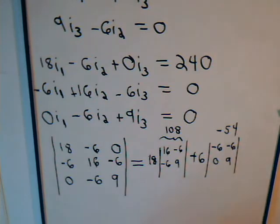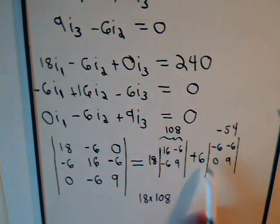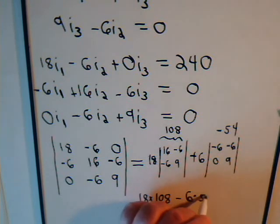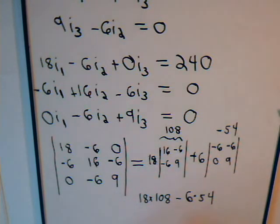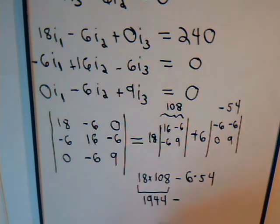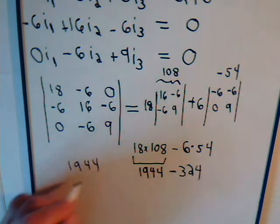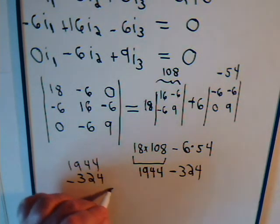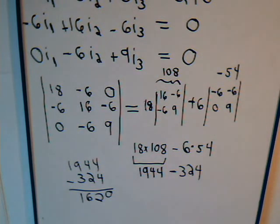The numerical value of the determinant is 18 times 108, minus 6 times 54. That gives us 1944 minus 324, which equals 1620. So the numerical value of this 3x3 determinant is 1620.